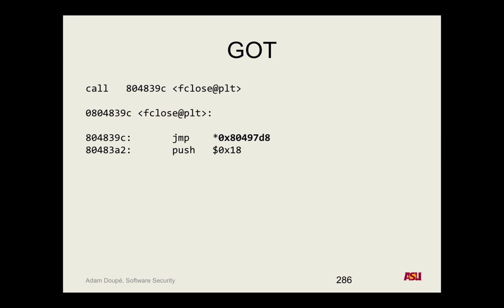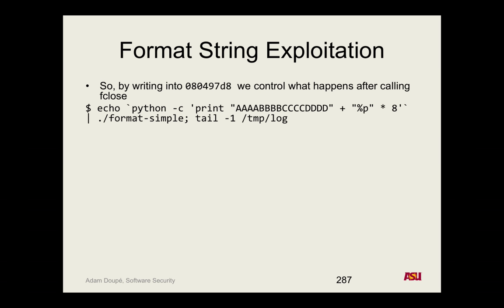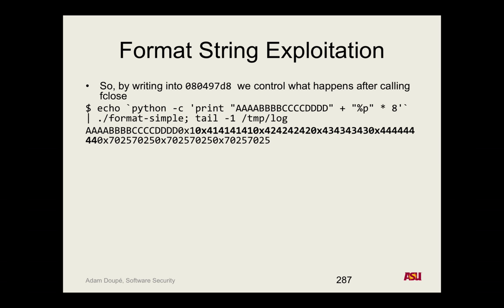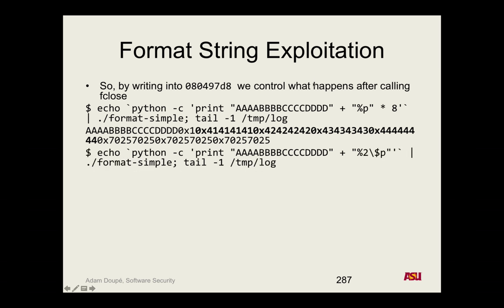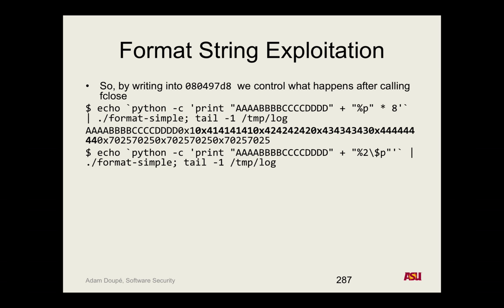So how do we go about doing this? We can look at exactly what I showed here. The code for fclose in the PLT is at 0x080497D8. So that's our target — if we can change those four bytes at 0x080497D8, we will be able to redirect the control flow to wherever we want. If we can put the address of our shellcode there, we've got everything we need.